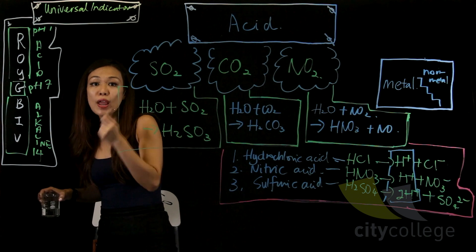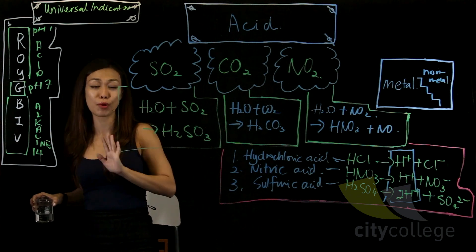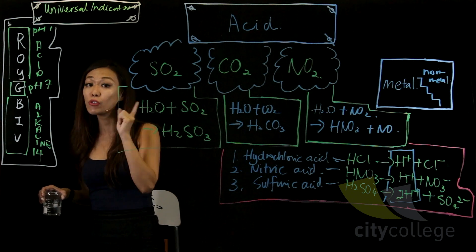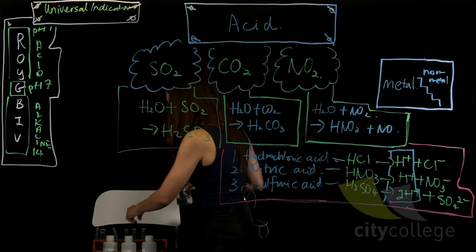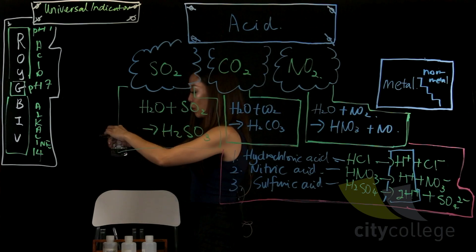If it doesn't change with red litmus paper, it doesn't show that it's an acid. It just shows that it has no reaction with the red litmus. But if you want to test if this is an acid, you have to use blue litmus paper. And what I have with me here is the universal indicator, so I'm going to...